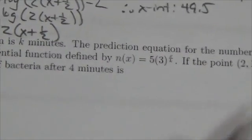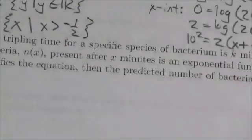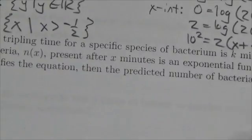5 times 3 to the x over k. Now we're told that the point (2,15) satisfies the equation. Now before we even go anywhere else here, let's just take a quick look at that. (2,15) satisfies the equation.